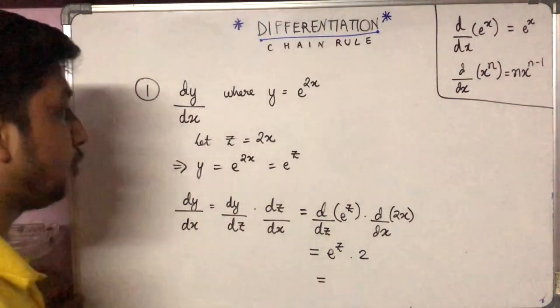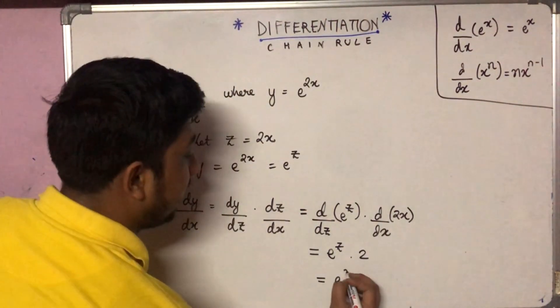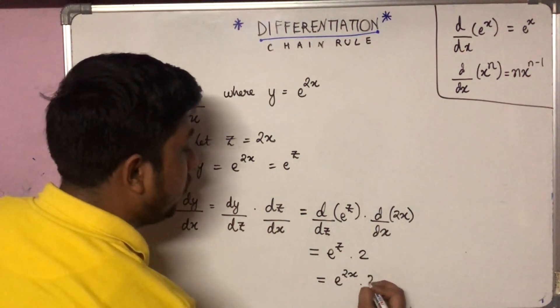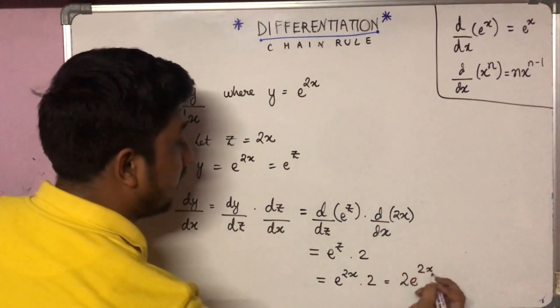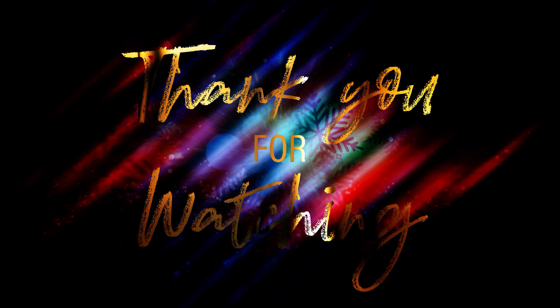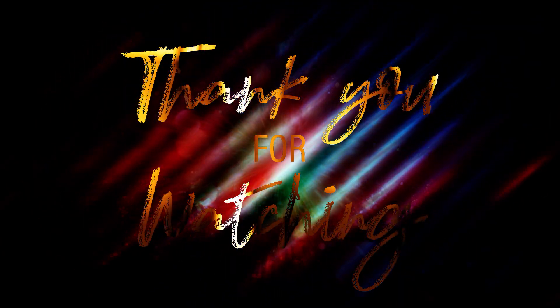Now we have z value put. Z is equal to 2x. So we have e to the power 2x into 2, that is 2e to the power 2x. This is the answer.